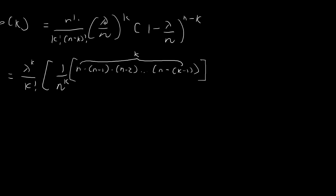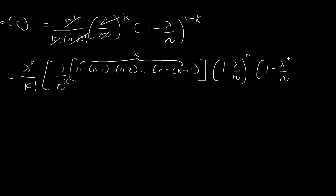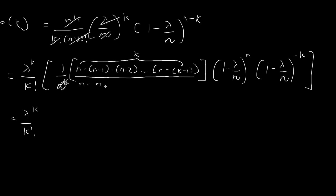We have considered the factorials and the n to the power of k. For the remaining term, we have 1 minus lambda divided by n to the power of n, and we separate out the negative k power. Notice we have k terms in the numerator and n to the power of k is just n multiplied by itself k times, so we also have k terms — k number of n's in the denominator — so each one of these n's is matched with one of the product terms in the numerator.